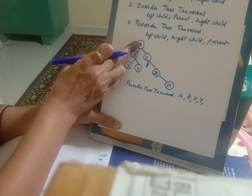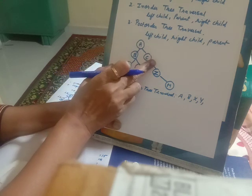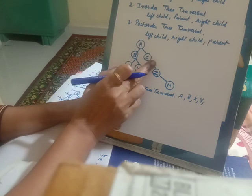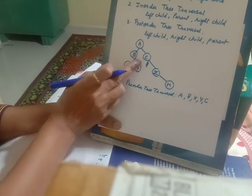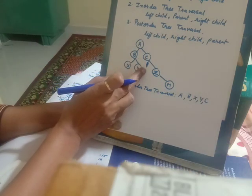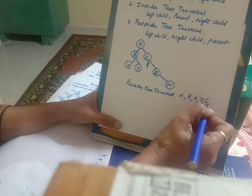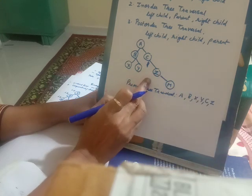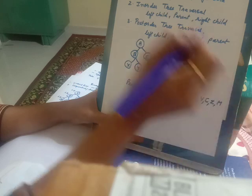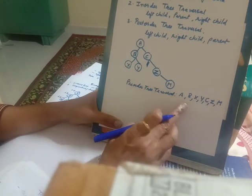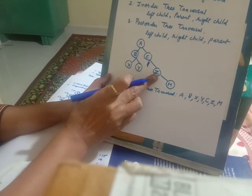There is nothing else to process in the left subtree. We go back to the root node, which is already printed, and the left child is also processed. So we move towards the right subtree and encounter node C. It is a parent, so it is processed. Since it doesn't have a left child, we move towards the right. Z is processed as parent, and since it has no left child, we process the right child M.